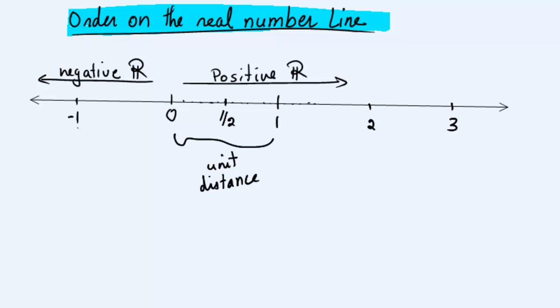So this way every single real number can be placed on the number line. Now, once we have our number line, look at it. We notice that the numbers on the left are less than the numbers on the right.